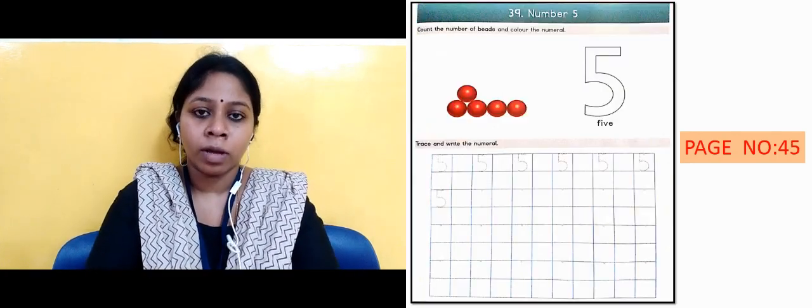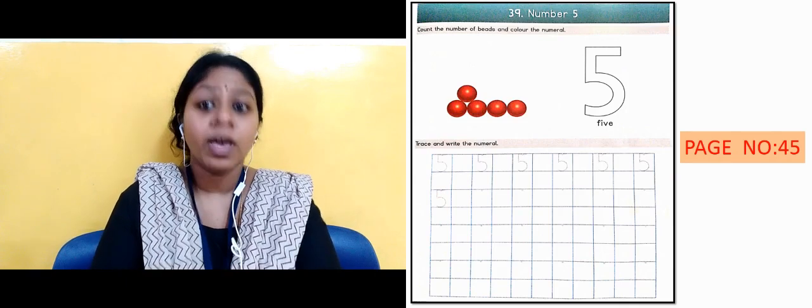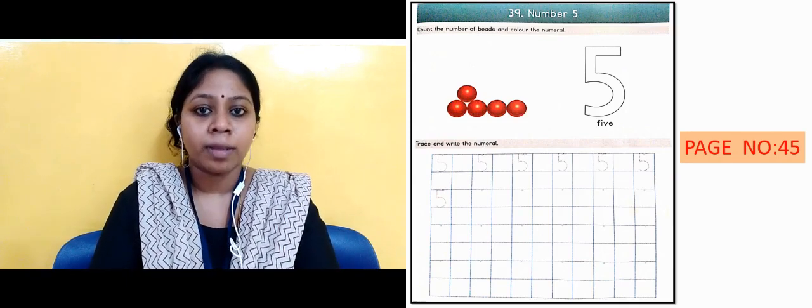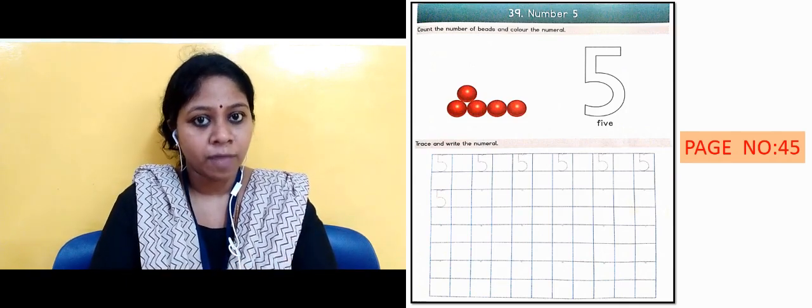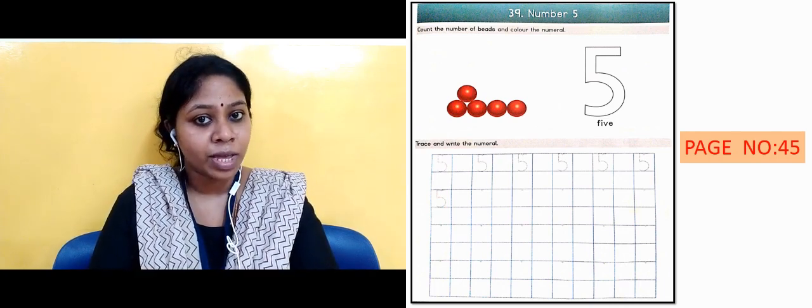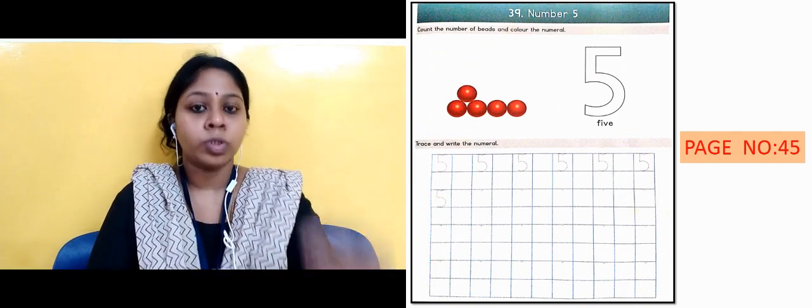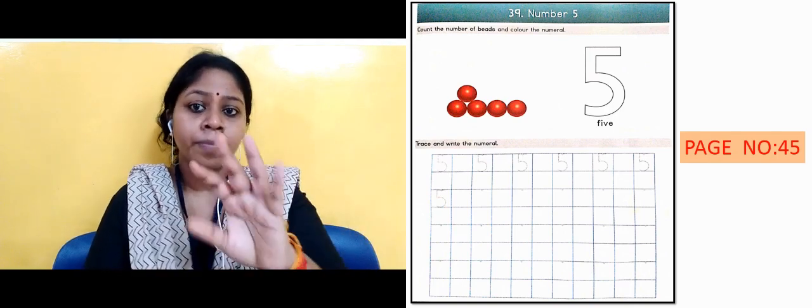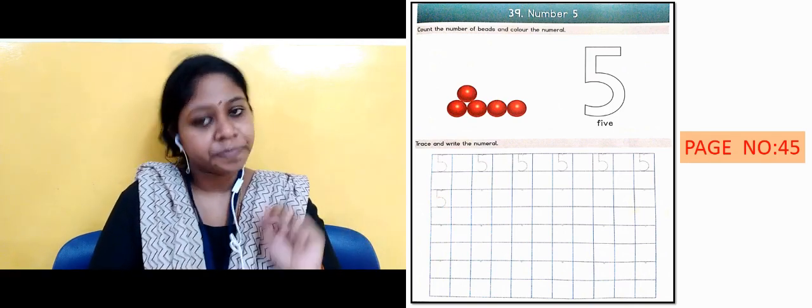The next slide is showing we will go to page number 45. What's in it? That is topic number 5. We counted number 5, colored it, traced and wrote it. And what exercise will you do? You will also try to trace and write the number and count the number 5.